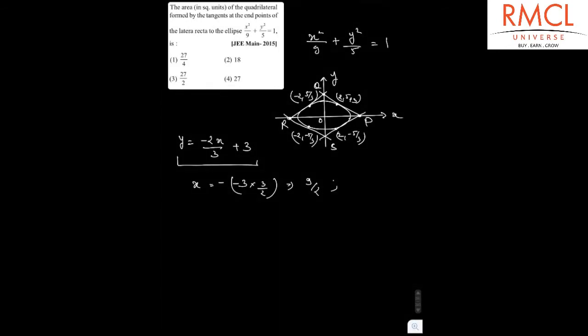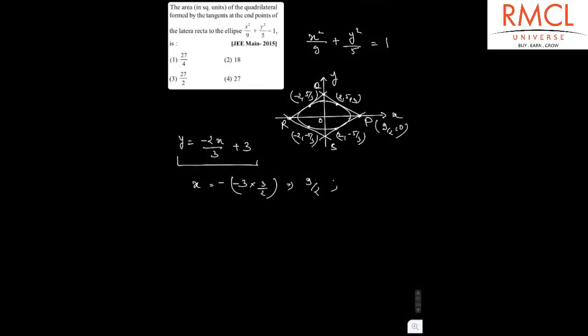Using this equation, we can find points P and Q. Point P is where y = 0, so x = 9/2, giving point P as (9/2, 0). Point Q is where x = 0, giving point Q as (0, 3).